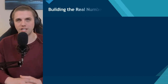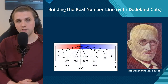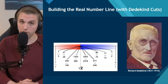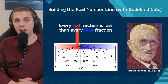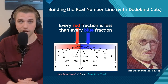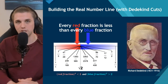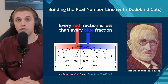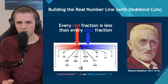Richard Dedekind was able to answer this with Dedekind cuts. He discovered that if you take the number line full of just fractions and split it in two — where every red fraction is less than every blue fraction, and squaring any red fraction gives a number less than two while squaring any blue fraction gives a number greater than two — it feels as though there is a hole. The question is whether we can fill this hole using a rational number.